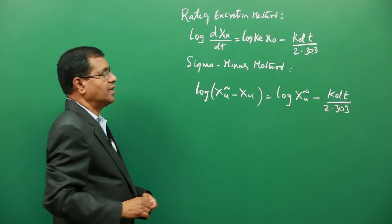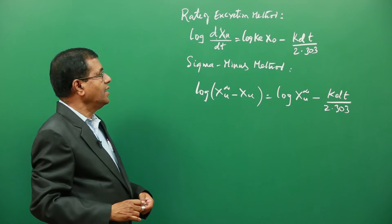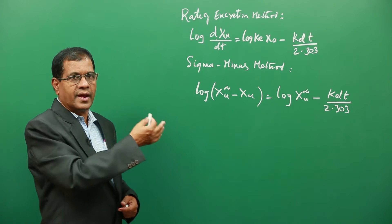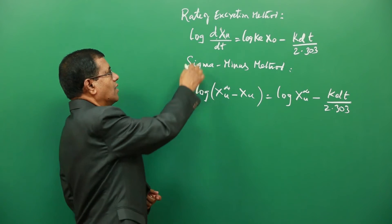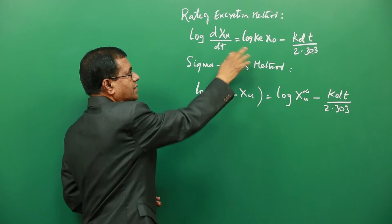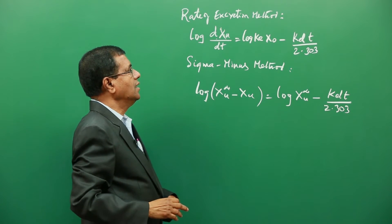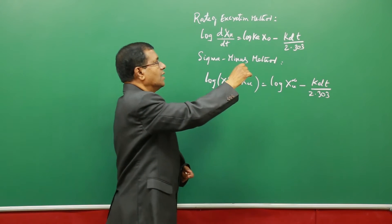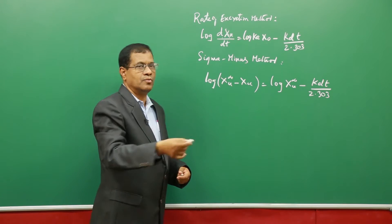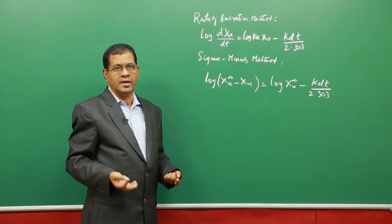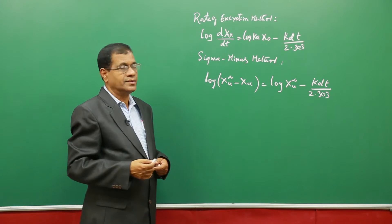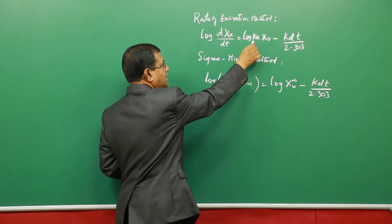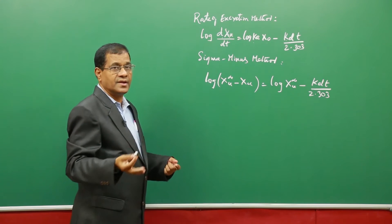This figure corresponds to the rate of excretion. The relationship between the rate of excretion and time is given by: log(dxu/dt) = log(ke) + (ke · x0) − (kel · t / 2.303), where ke is the excretion rate constant, x0 is the dose given, and kel is the elimination rate constant.